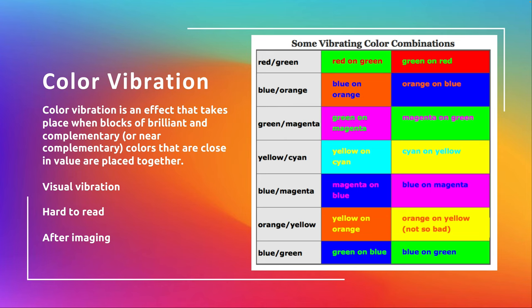You can get after-imaging. If you stare at a yellow dot for about 30 seconds and then look at a white wall, you get almost a purplish, bluish after-image — because it's the complement. Similarly, if you stare at the tail light of a car at a stoplight and then look at something light when the light turns green, you'll see a green after-image, because red and green are complements.